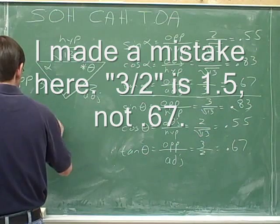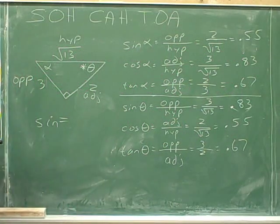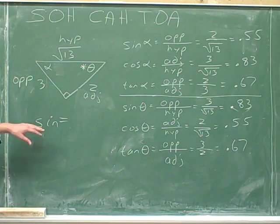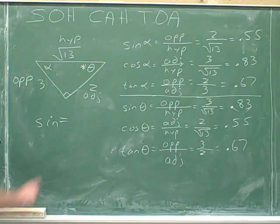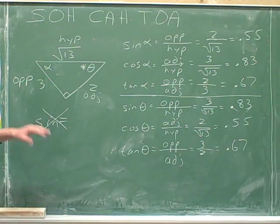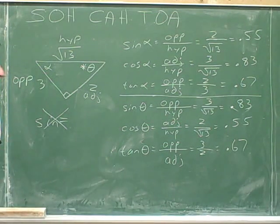And again, you would never just want to write sine equals. It's meaningless to say sine unless you say the sine of what? You have to say the sine of theta equals, or the sine of alpha equals. Don't just say sine, cosine, or tangent without specifying which angle you're focusing on.